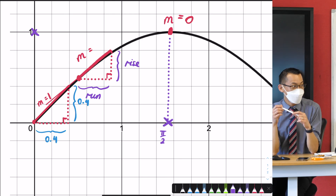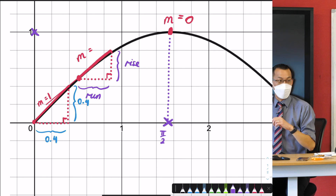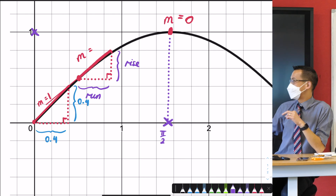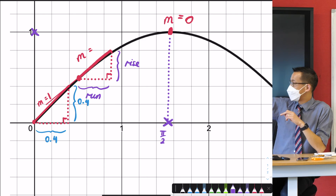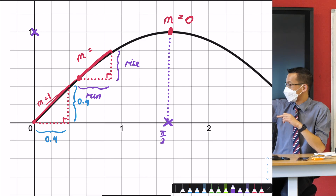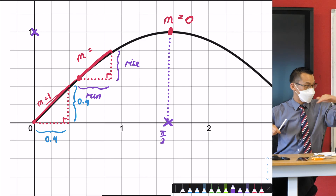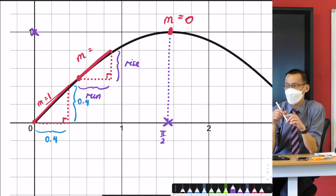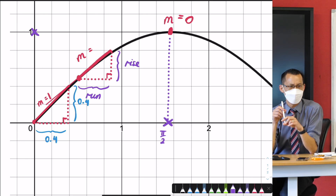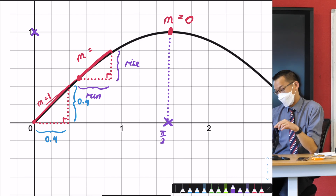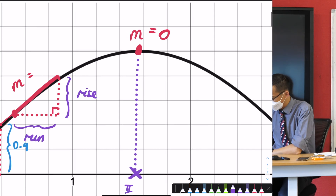I'll give you a clue: the gradient is going to be between one and zero, because somewhere you can see it's going to be less than one — that's the steepest it gets — and zero is the shallowest it gets in that section. What do you think? I'm going to have to do one on the spot. All right, fine — here we go. I'm going to pick a spot like here.